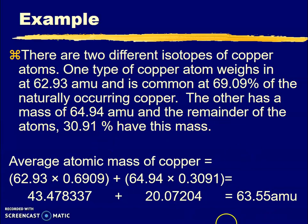Using my rounding rules, I get 63.55, and the unit for average atomic mass is always amu. So my final answer has four sig figs and a unit. That is how you calculate average atomic mass.